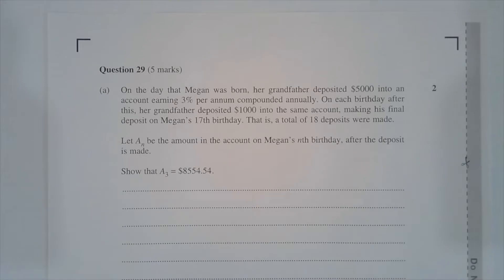Question 29, Part A. On the day that Megan was born, her grandfather deposited $5,000 into an account earning 3% per annum compounded annually. On each birthday after this, her grandfather deposited $1,000 into the same account, making his final deposit on Megan's 17th birthday. That is, a total of 18 deposits were made.